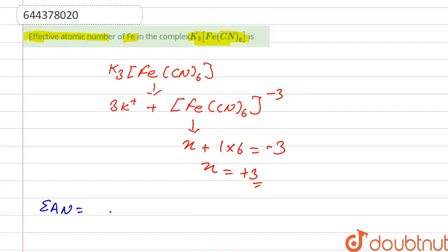So here atomic number of iron is 26, and from here we calculated the oxidation number that is 3, and here 2, coordination number is 6